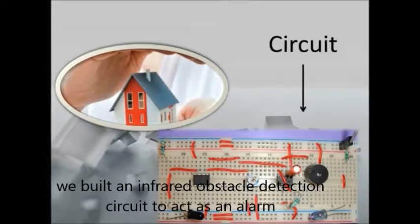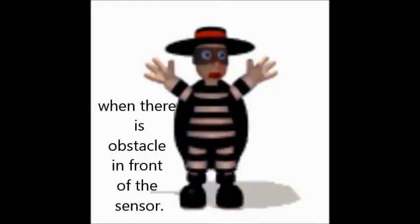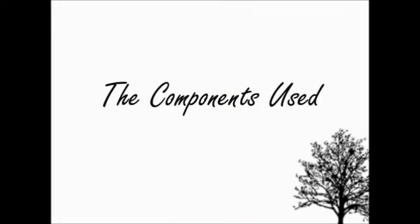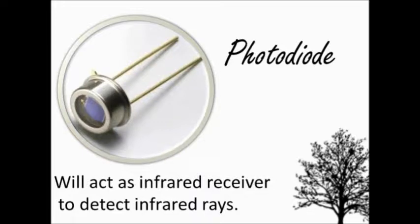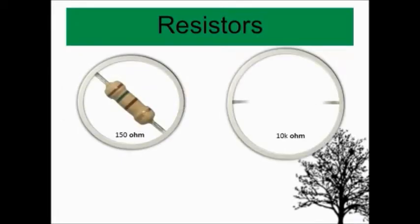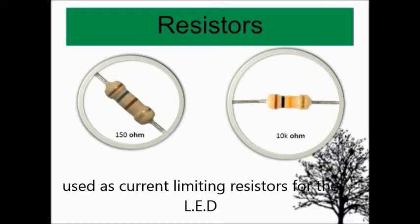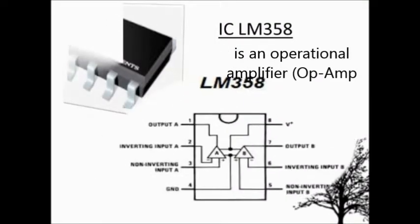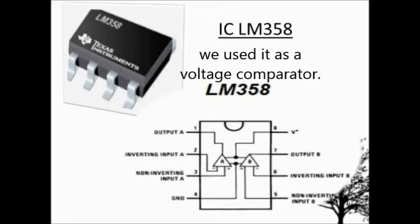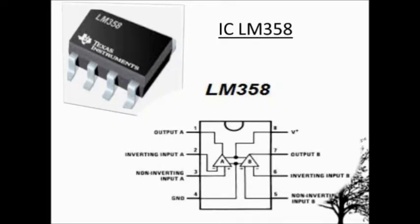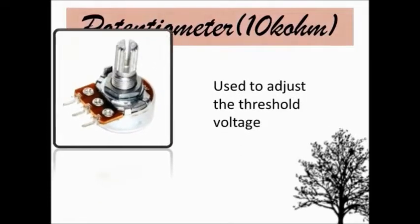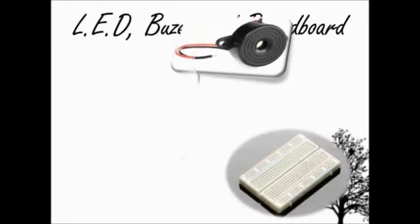In this project, we built an infrared obstacle detection circuit to add as an alarm. This circuit will be triggered when there is obstacle in front of the sensor. The components that we use are infrared LED which keeps transmitting infrared, photodiode which acts as infrared receiver to detect infrared, resistor 10kohm and 150ohm used as current limited resistor for the LED. IC LM358 is an op-amp. In this circuit, we use it as a voltage comparator and we use only one comparator here which has input at pin 2, pin 3 and output at pin 1. Potentiometer 10k is used to adjust the threshold voltage. Last but not least, LED and buzzer.